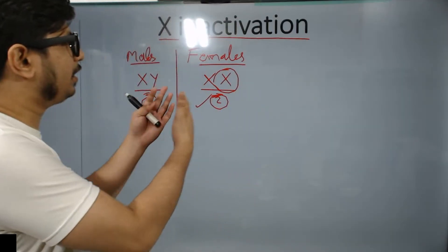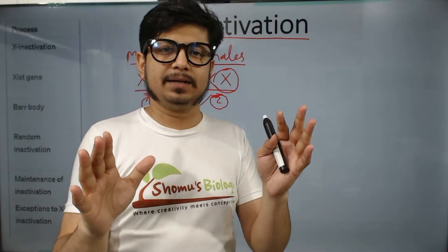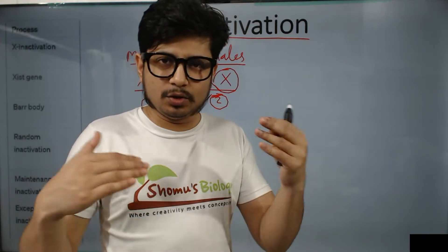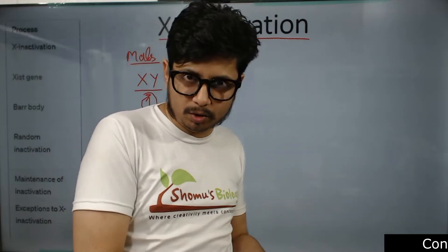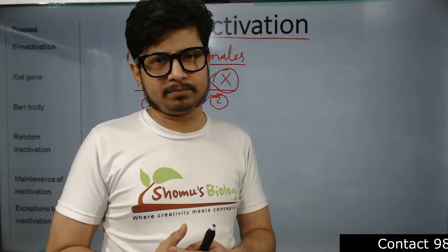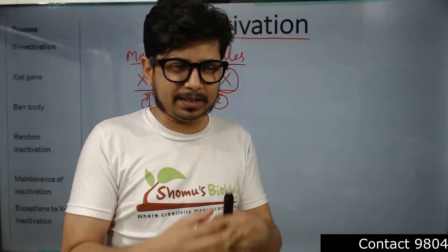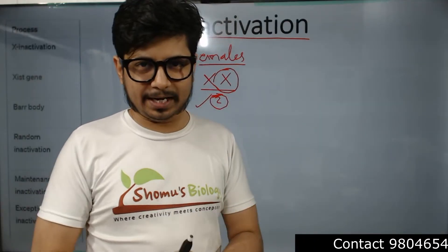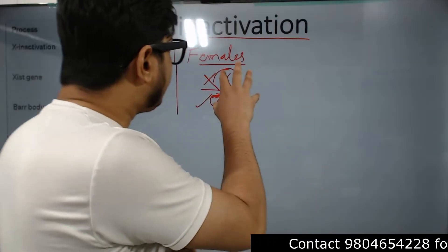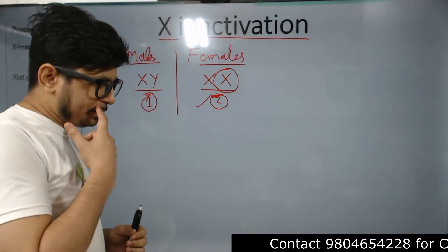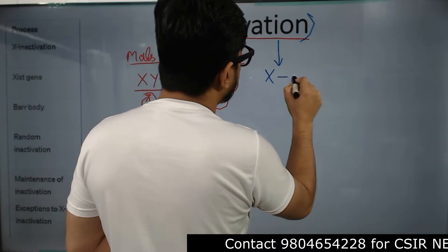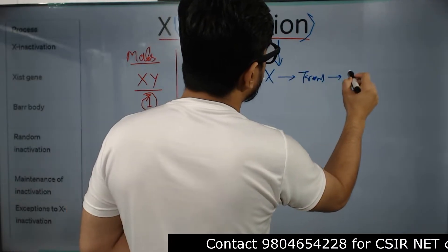X-inactivation is also known as dosage compensation and works in mammals to inactivate one extra X. Now, which one of the two X's is considered the extra X? There is nothing specific — either of the two X's can be inactivated. There is no fully known reason or logic for selecting one X over the other, though there are some hypotheses we'll discuss. Inactivation means we don't allow that X to be transcribed or translated — no proteins are made from it.